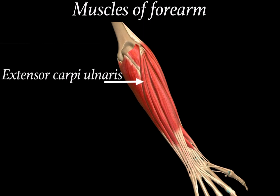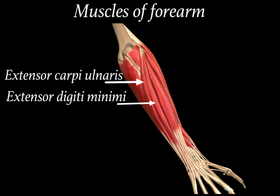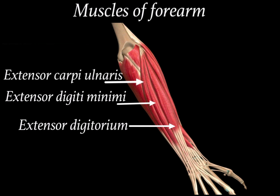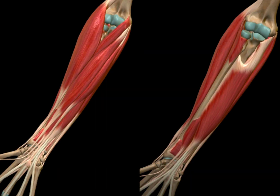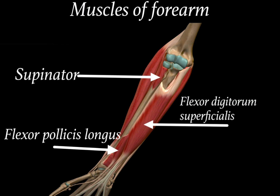Moving on to the extensor compartment, we have extensor carpi ulnaris, below which lies extensor digiti minimi, then extensor digitorum. We also have extensor carpi radialis brevis and extensor carpi radialis longus. When we remove brachioradialis, pronator teres, and flexor carpi radialis, we find the supinator, flexor pollicis longus, and flexor digitorum superficialis.